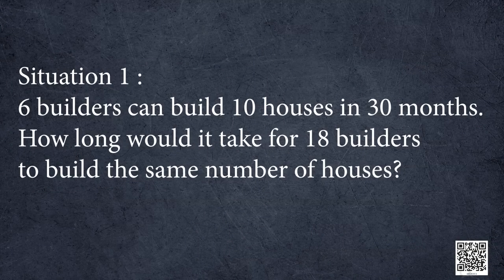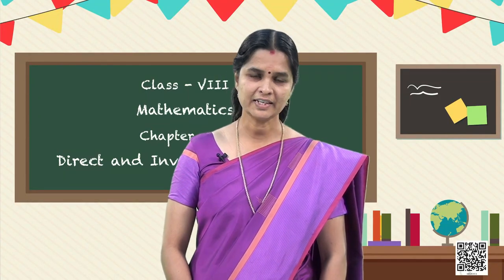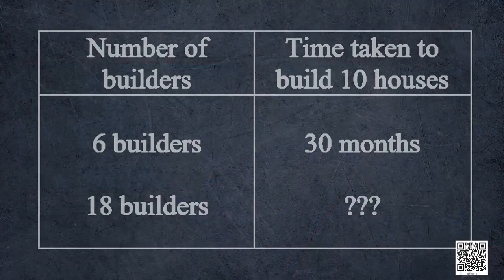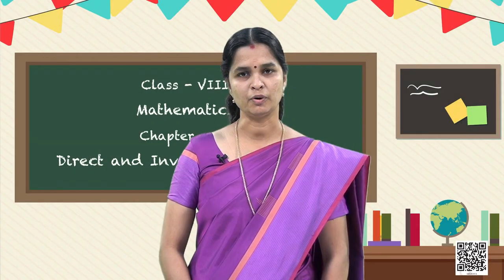Let us move on to the first situation. Situation 1: 6 builders can build 10 houses in 30 months. How long would it take for 18 builders to build the same number of houses? Will they take more time or less? From the tabular column we can see that when 6 builders build 10 houses in 30 months, definitely 18 builders can build the same number of houses in lesser time. That is, when we have more persons to work, we can do the work faster.